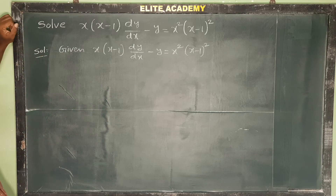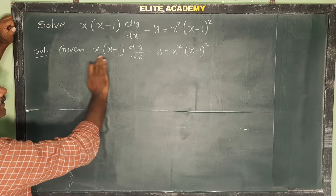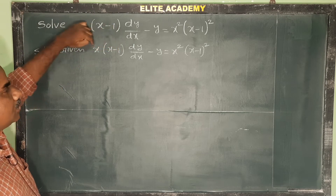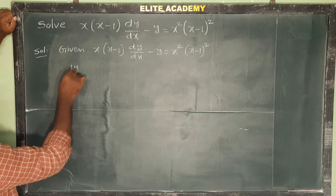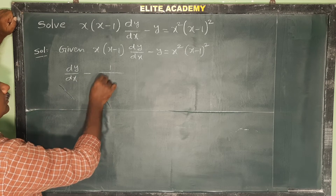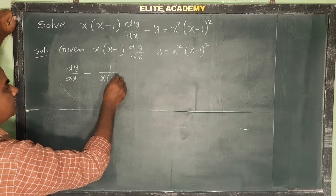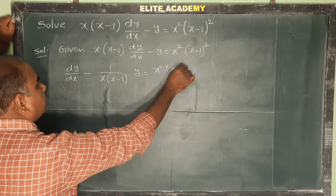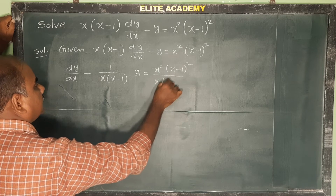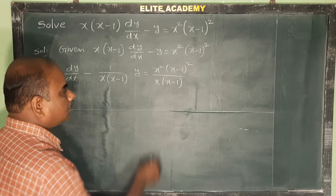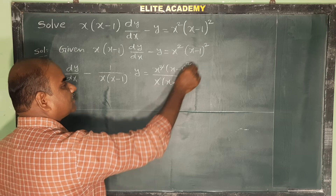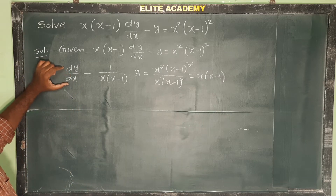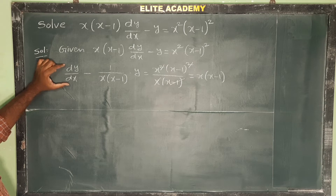Since it is not in general form, we need dy/dx on its own. Divide the entire equation by x(x-1). After cancellation, x cancels and x minus 1 cancels, leaving dy/dx minus 1 by x(x-1) times y equals x(x-1). Now it is in standard linear form.